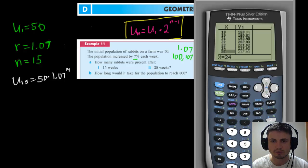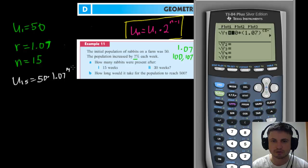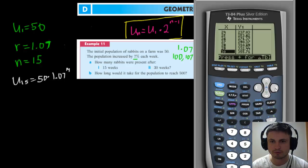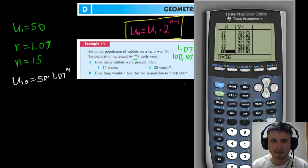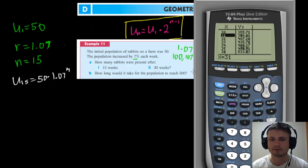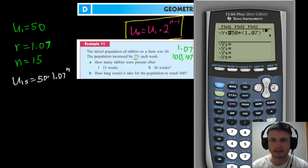For the question of how long it takes to reach 500, using the table we look for where the y-value reaches 500 — that's at 36 weeks. This function approach is much faster than solving manually; doing it step by step would take at least five minutes. This is a much faster way to solve geometric sequence word problems: put the sequence as a function where n is x, then use your table. Hopefully this was helpful — thank you for watching and good luck!